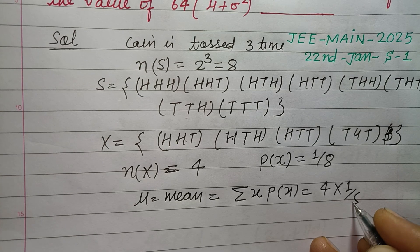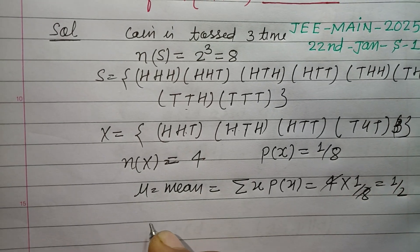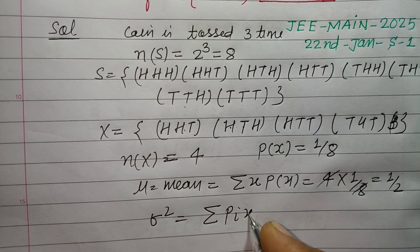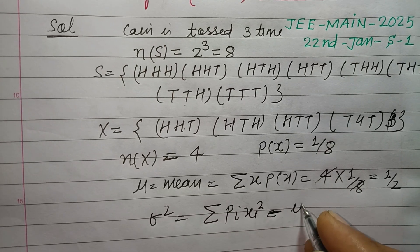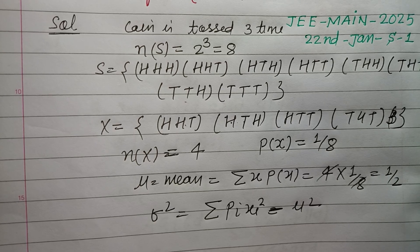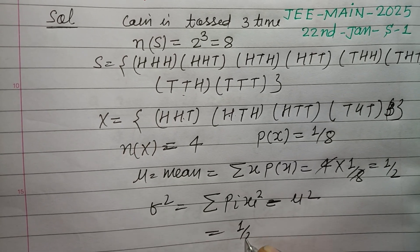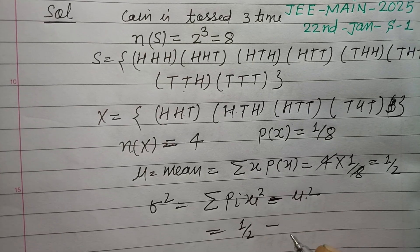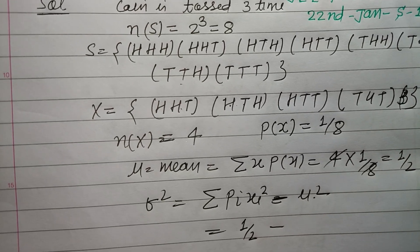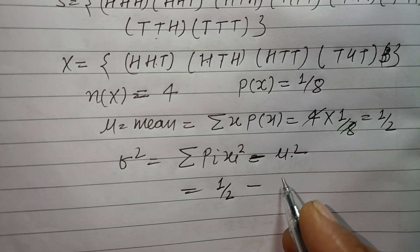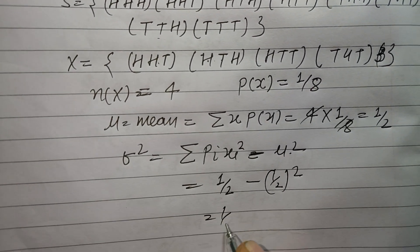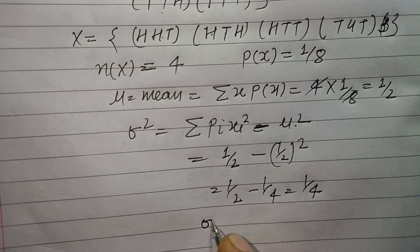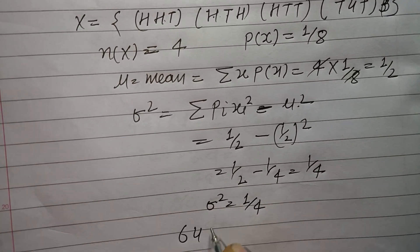The mean mu equals sigma x·P(x). With x = 4 and P(x) = 1/8, mu = 4 × (1/8) = 1/2. For variance, sigma square equals sigma p·x² minus mu squared, which gives 1/2 minus (1/2)² = 1/2 minus 1/4 = 1/4. So sigma square is 1/4.